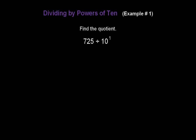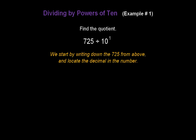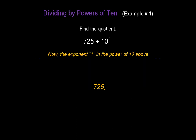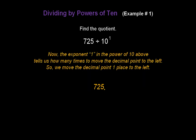Let's do another one. Find the quotient of 725 divided by 10 to the first power. We start by writing down 725 and locate the decimal — we know it's going to be at the end because we don't see one. The exponent 1 tells us how many times to move the decimal point to the left. So we move the decimal point one place to the left: one. The answer is 72.5.